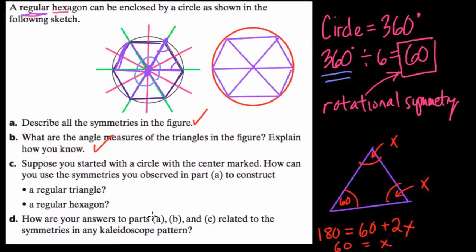How are your answers to parts A, B, and C related to the symmetries in any kaleidoscope pattern? Well, the hexagonal shape, the 60-degree rotation is connected very nicely to the way we construct kaleidoscopes and the types of symmetries we see in those wonderful shapes. But that's something I think I'll get into for another video here. I'm just thinking that I just wanted to focus mainly on the rotational and line symmetries of these two shapes to kind of understand what's happening.